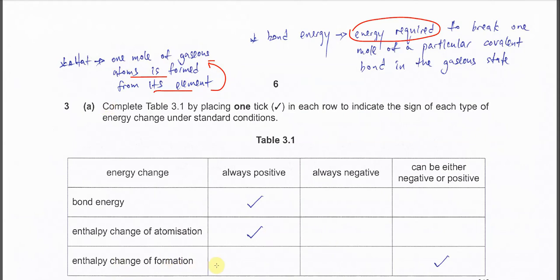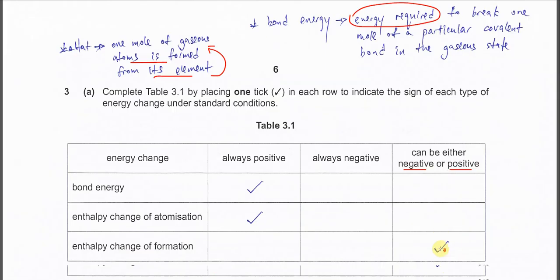Enthalpy change of formation, this one you learn in the AS, it always can be negative or positive. So still uncertain, it can be negative or positive. So you just put the tick here.